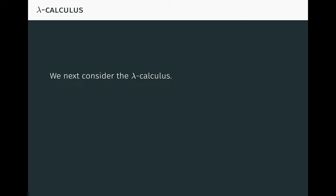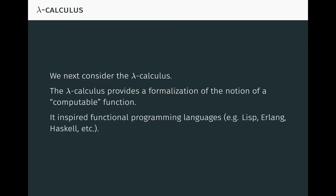For additional examples, we consider the lambda calculus, which we revisit throughout this video series. The lambda calculus provides a formalization of the notion of a computable function. By a computable function, I mean a function that can be computed, like on a modern computer. The lambda calculus inspired modern functional programming languages like Lisp, Erlang, Haskell, and many others. It even inspired non-functional programming languages, where anonymous functions are often called lambdas.